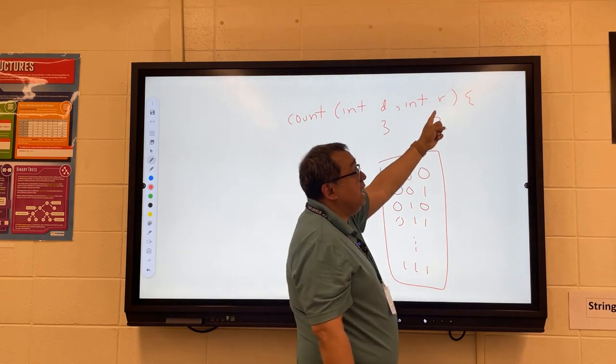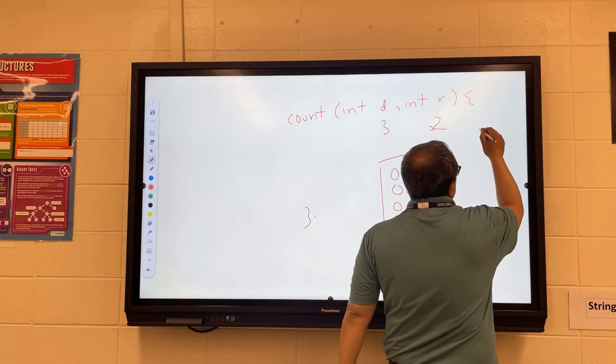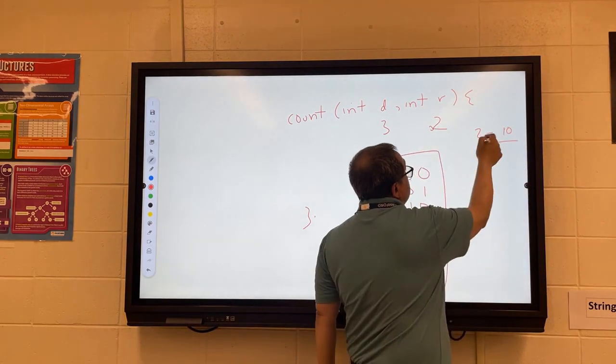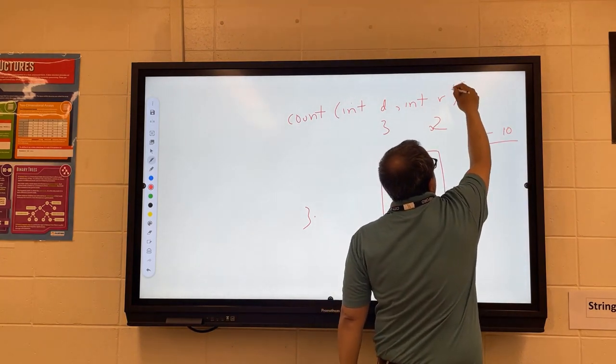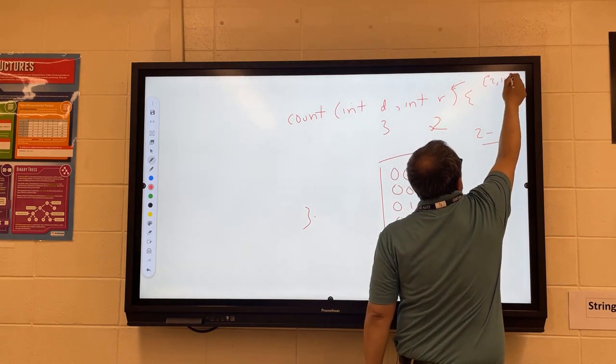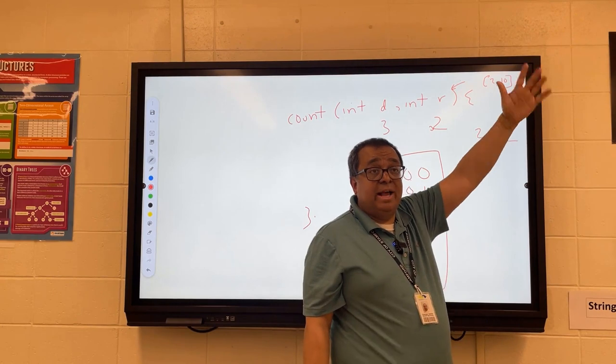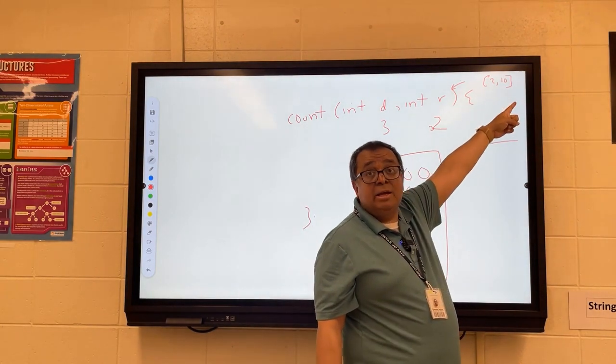This base, by the way, will always be between two and, we'll just say, ten. Okay? So this r will be in the range two to ten. So you only have to worry from binary to decimal. You don't have to worry about hexadecimal or any of that stuff. That's going to be like the range.